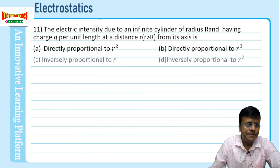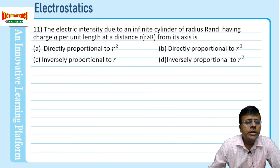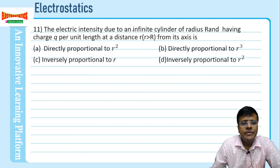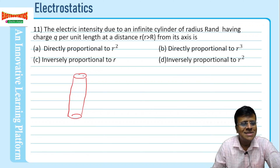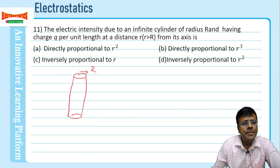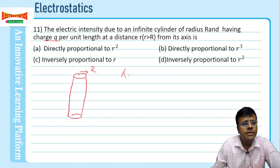We will continue with problem number 11. The electric field due to an infinite cylinder — this is an infinite cylinder. I cannot draw an infinite cylinder, so it appears as a finite cylinder. But the radius is capital R and it has a charge per unit length. The charge is q per unit length, so that is the value of lambda — lambda equals q.